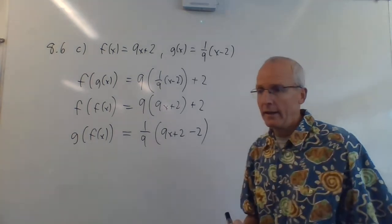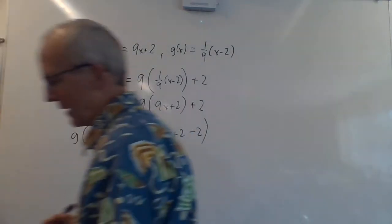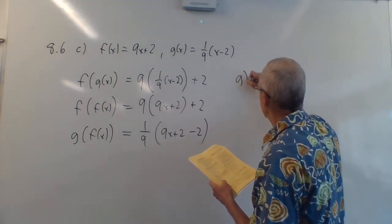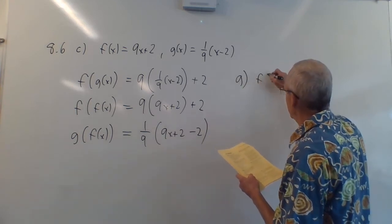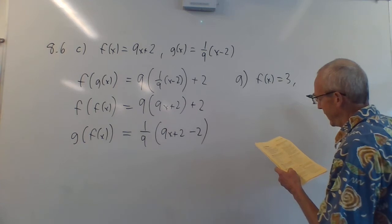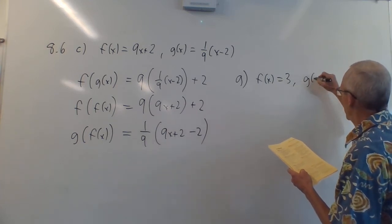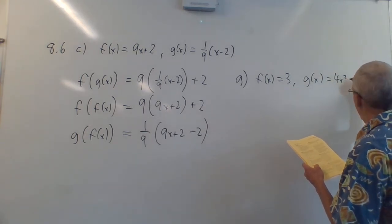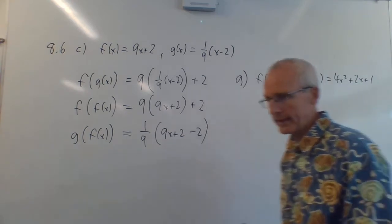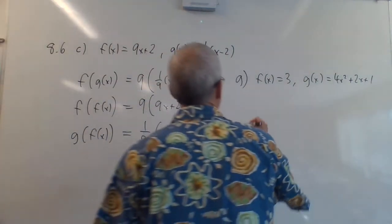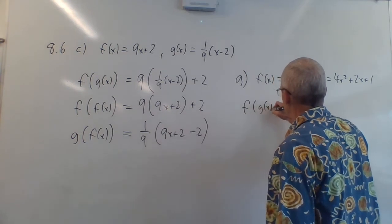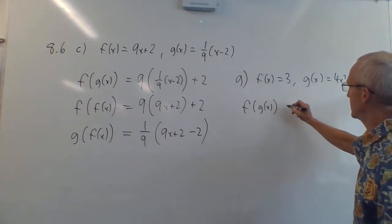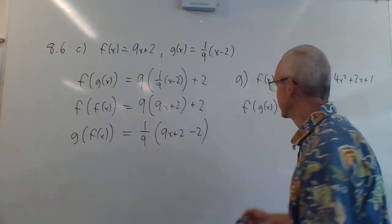It gets a little weird at the very end. They say f of x is equal to 3 — there's no x in it. And g of x is 4x squared plus 2x plus 1. So for f of g of x: everywhere there's an x, you take f of x and plug that in. But there is no x, so it's just equal to 3. No x — it's easy.